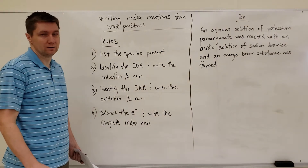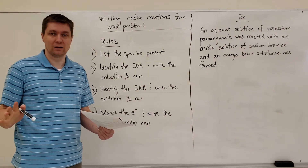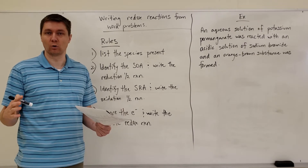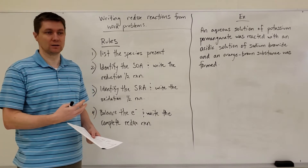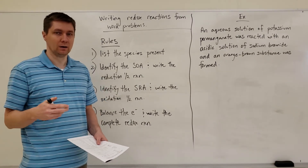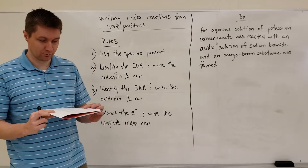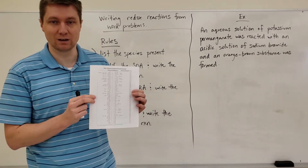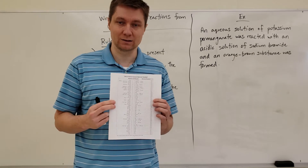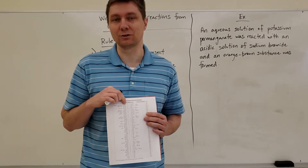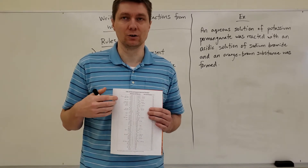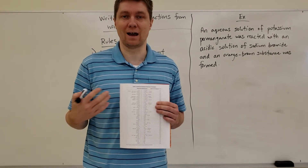The next topic we're going to talk about is writing balanced redox reactions from a word problem. Before we jump into the rules on the board, you need to go into your data booklet and turn to page 7. This table is a table of selected standard electrode potentials — essentially a table of reduction half reactions.